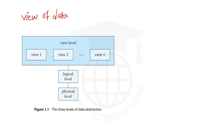Abstract view of data means to hide certain details of how the data are stored and maintained in our database system. View of data means describing all the details — like how data is stored, what kind of data is stored, how they are organized and their structure. The database system provides users with these views.